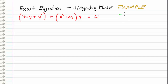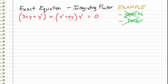The first thing I would try to do is to separate the variables and do straight up integration. So let's check to see if it's separable, but upon inspection we determined that it is not separable, so we can't use straight up integration. It's also nonlinear — not linear.